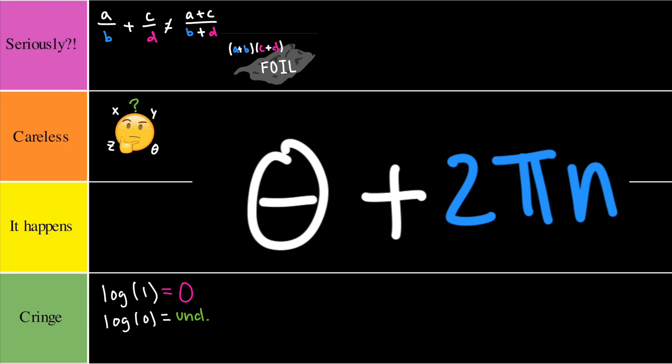The next error we have is solving for the angle theta without considering multiple solutions. This often happens when you solve a trig function and you're only restricted to the unit circle which has a domain from 0 to 2π. However, we should always remember that these functions are 2π periodic. This one would have to go to careless.